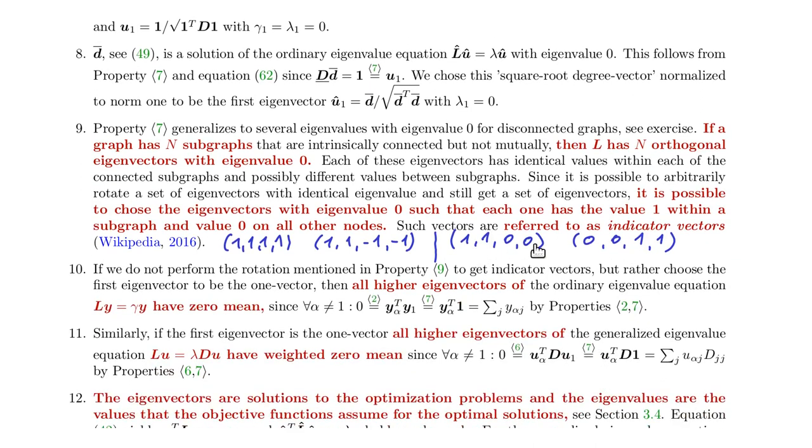Now if you don't do this, as I sort of implicitly mentioned just now, but you choose the first one to be one, one, one, one, then because of this decorrelation constraint here, wait a second, okay, it's not this one, but if you would replace one by beta, it would be the decorrelation constraint, or orthogonality constraint, then you would know that all the others are orthogonal to this one, and this means they have zero mean.